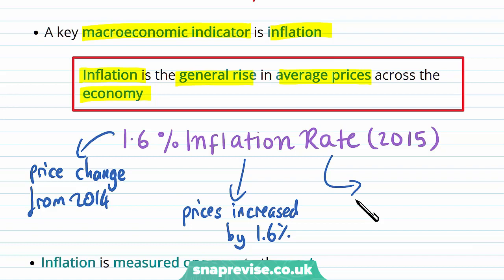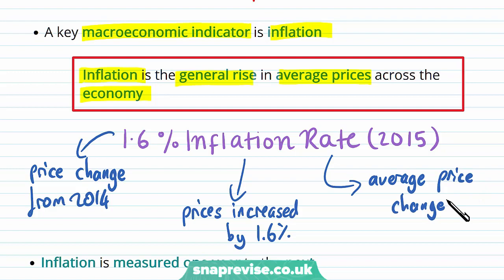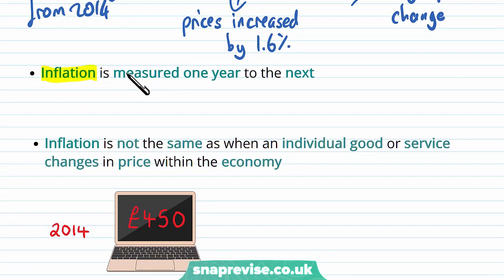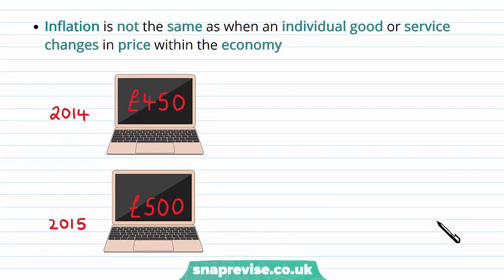Because our inflation rate is linked to our index, that means the average price in the economy has changed as well. One thing to note is that inflation is measured one year to the next. The Bank of England also does quarterly analysis to see what the inflation rate is like through the year; however, the inflation rate that matters to us is the year-to-year figure.